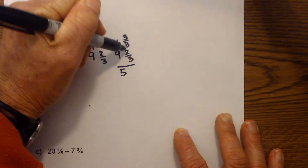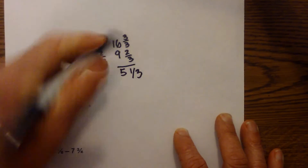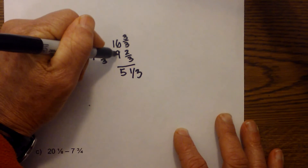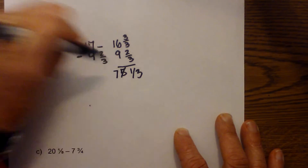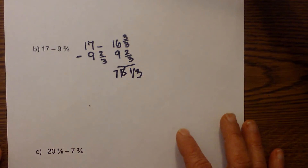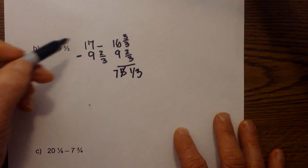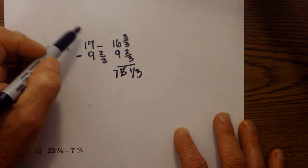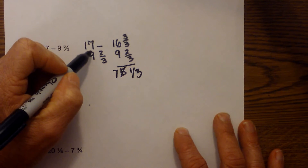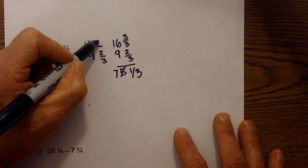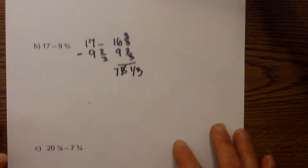Three minus two is one, so the answer is seven and one-third. Since we didn't have a fraction to subtract from, we borrow one and write three over three so we don't need a common denominator.